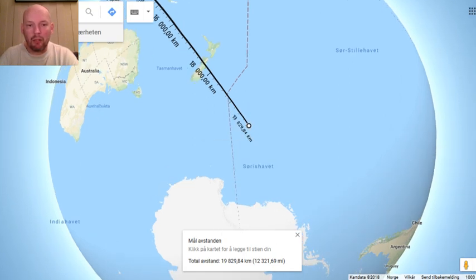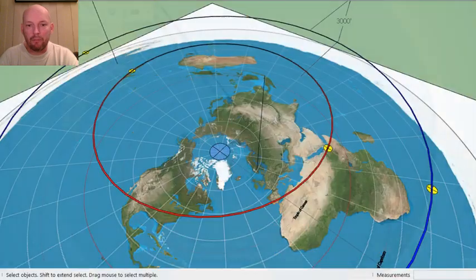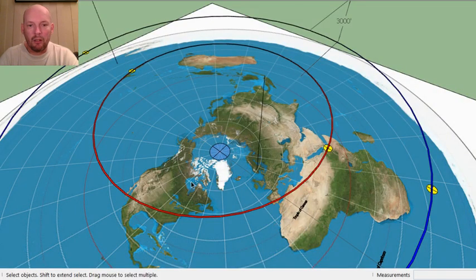So when you go back to the flat earth model, this is Norway where I live, this is the sun when it's at highest in the winter and in the summer, and this is the sun in the summer night, and this is at the winter night.